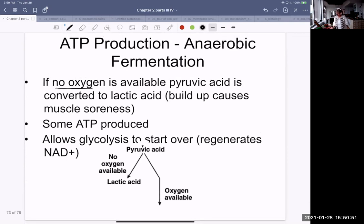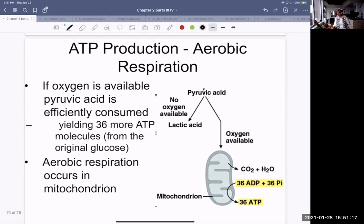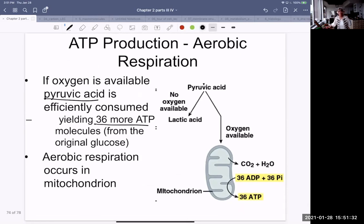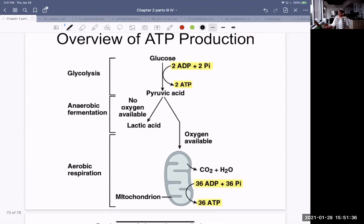We looked at glycolysis, splitting a six-carbon glucose into two three-carbon pyruvic acid molecules, just a bit of review, yields two ATPs. That's fantastic. If there's no oxygen, the pyruvic acid is converted to lactic acid, sometimes into alcohol, but in animals into lactic acid. There's some ATP produced, but of course this process can go around in a cycle because of the NAD. If there is oxygen available, then pyruvic acid will be efficiently consumed in the mitochondrion, and then there'll be 36 more available ATP molecules. That production occurs with alarming frequency.